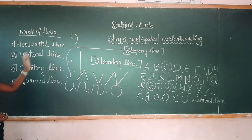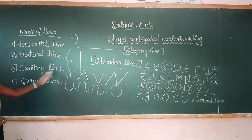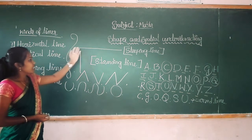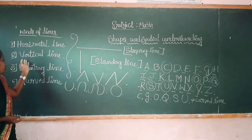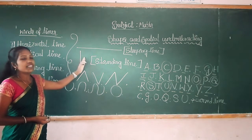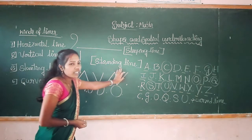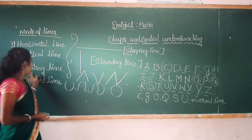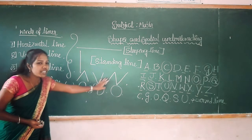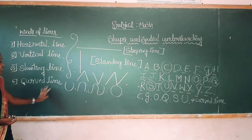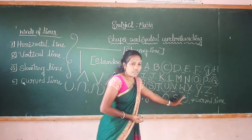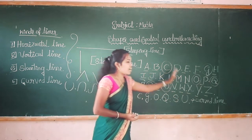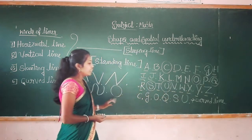So dear students: horizontal line, vertical line, slanting line, and the other one is curved line. The horizontal line is also called sleeping line. The position of the vertical line is standing, that's why we call it the standing line. Then the slanting line — it is called slanting line. Some letters have curved lines and some letters have straight lines.